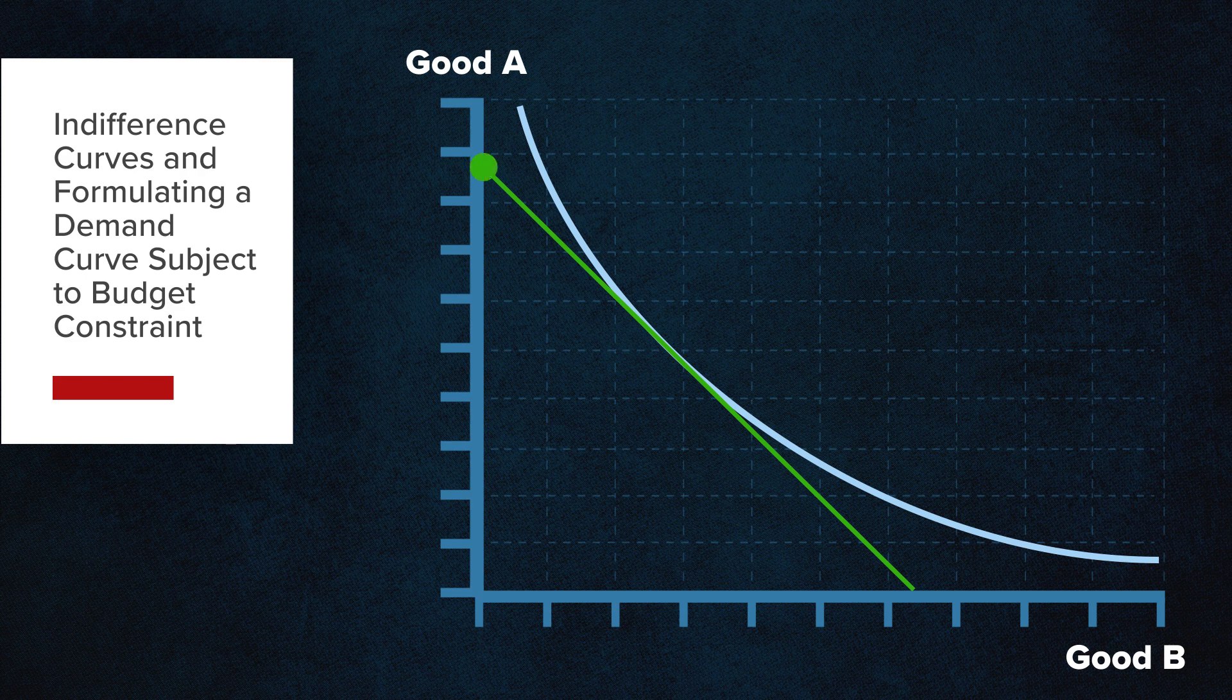The budget constraint can only intersect with the indifference curve at a single point. Point J is that point where consumer utility is maximized.